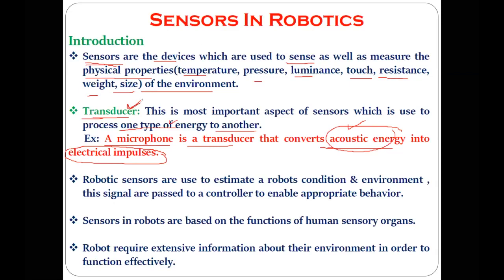The microphone we use in programs also has this kind of transducer. Different kinds of transducers are utilized to convert one form of energy into another. We use sensors in robotics mainly to estimate the actual condition of the robot and to know the condition of the environment, so we can convey information to the robot and perform actions through it.